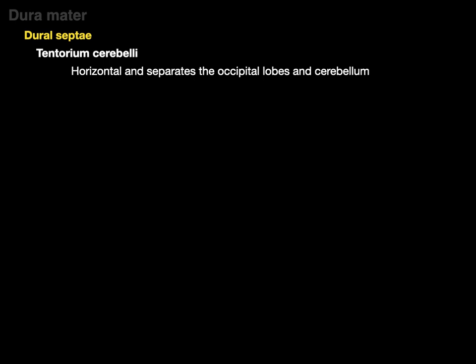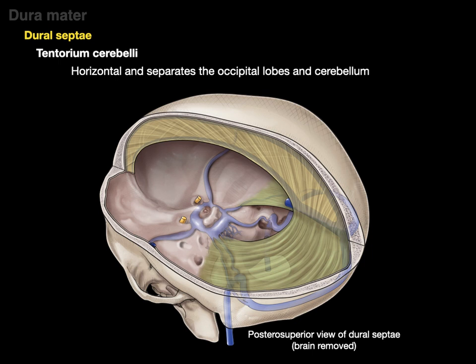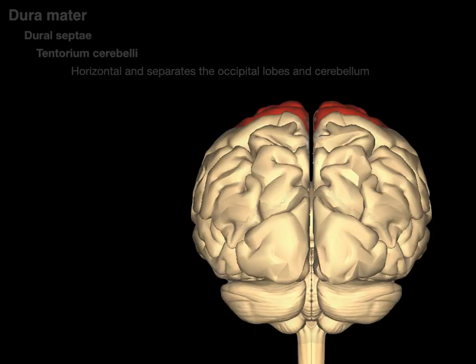The tentorium cerebelli is a bit different in that it is horizontal and it separates our occipital lobes and cerebellum. Here we see the same view with our tentorium cerebelli — it is horizontal and perpendicular to the falx cerebri.